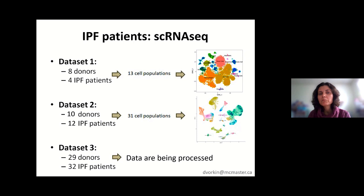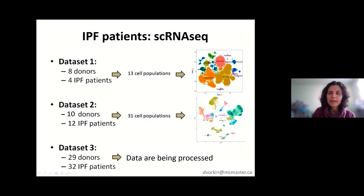We can see the different populations here. For example, we have the macrophages, the AT2 cells, the basal cells, the dendritic cells, fibroblasts, and similar populations. We have all the populations from the first dataset here, but in the second dataset we also have additional ones. Now I'll move to specific examples.